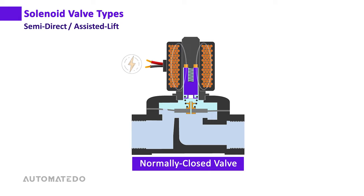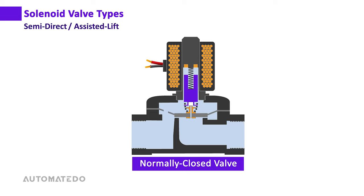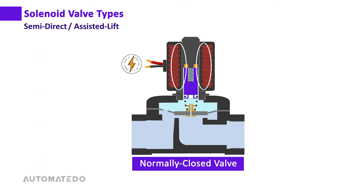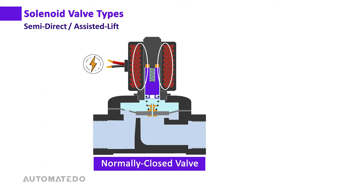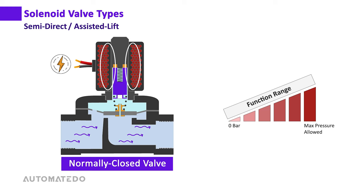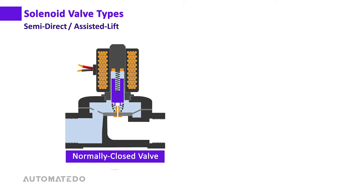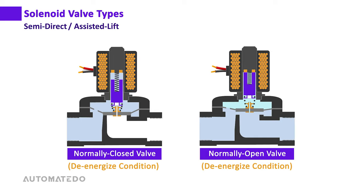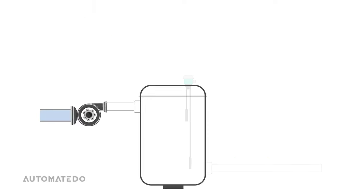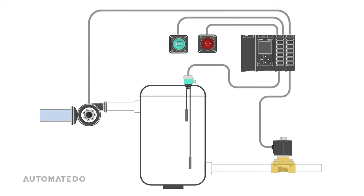As soon as the solenoid is de-energized, the plunger falls, lowering the diaphragm and closing the orifice, which increases pressure above the diaphragm and shuts the valve. The semi-direct acting solenoid valve can operate from zero bar and controls high flow rates. The normally open valve operates on the opposite principle.